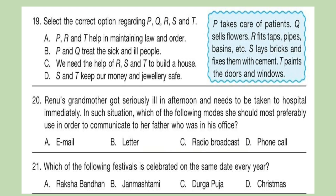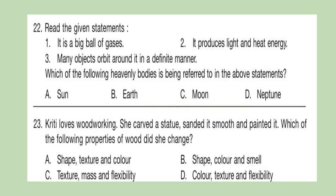Question 21: Which of the following festivals is celebrated on the same date every year? Think about your answer and write it down. Question 22: Read the given statements. 1. It is a big ball of gases. 2. It produces light and heat energy. 3. Many objects orbit around it in a definite manner. Which of the following heavenly bodies is being referred to in the above statements?